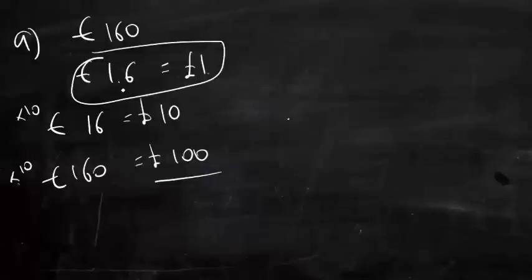With these questions they always give you the conversion rule so use that to get to the target. 1.6 euros, we have to think what can we times by to get to 160. So do it in stages times 10 to get 16, times another 10, and the same on the other side, which gives us 100 pounds.